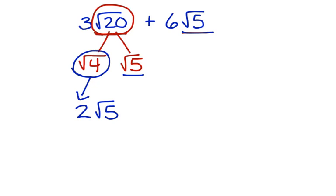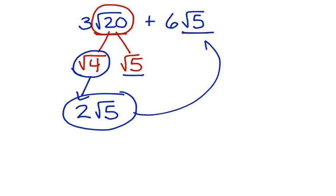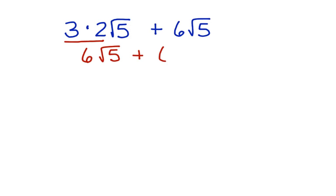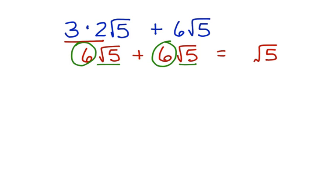Now that we've simplified the square root of 20, we need to put this back into the original problem. The 3 was here from before, so now we have 3 times 2 square roots of 5, plus 6 square roots of 5. We multiply 3 times 2, which gives us 6 square roots of 5 plus 6 square roots of 5. Now we have like terms — we bring the square root of 5 into our answer and add 6 plus 6, which gives us 12 square roots of 5. This is our answer.